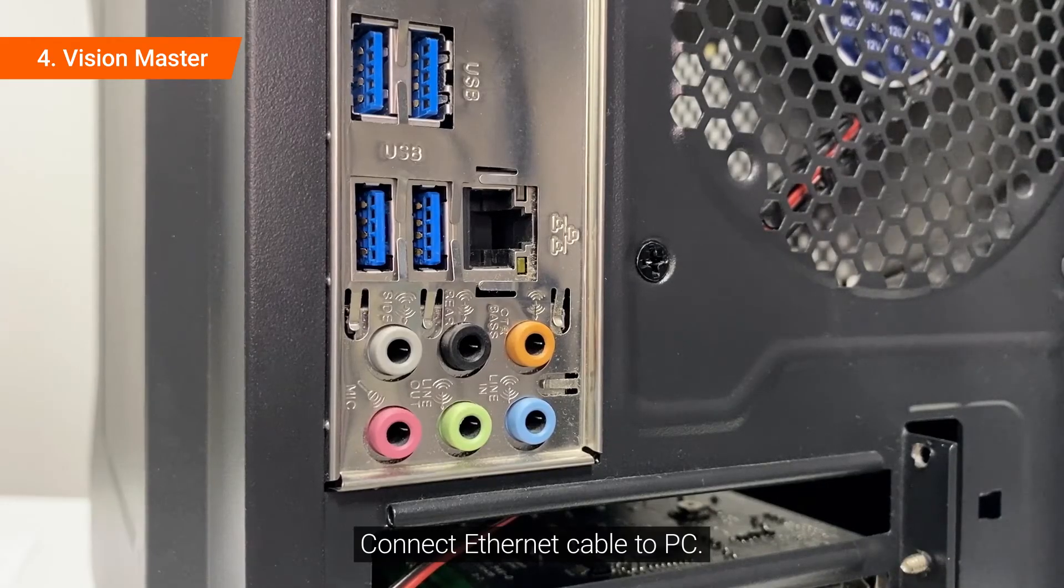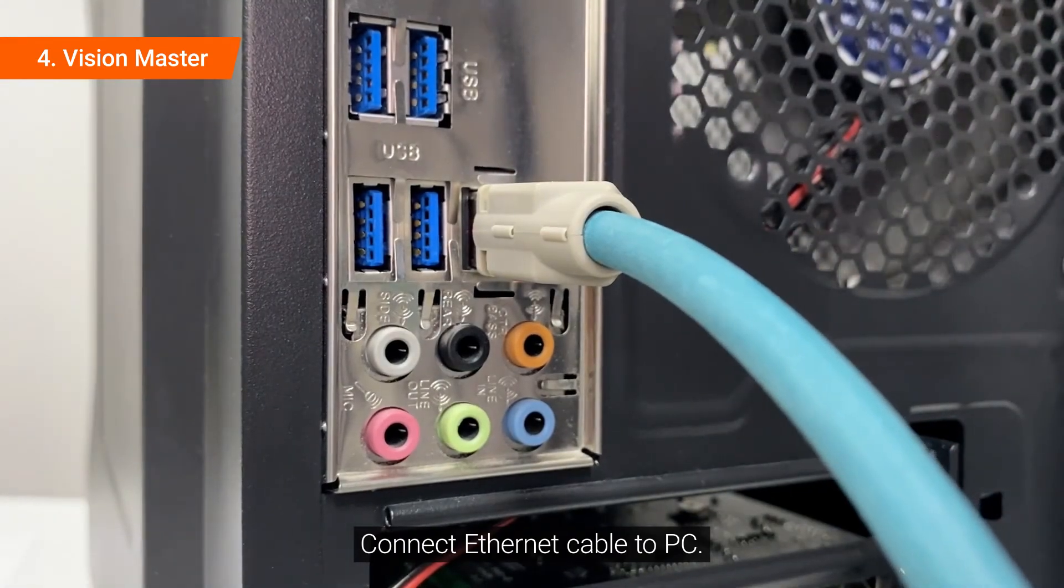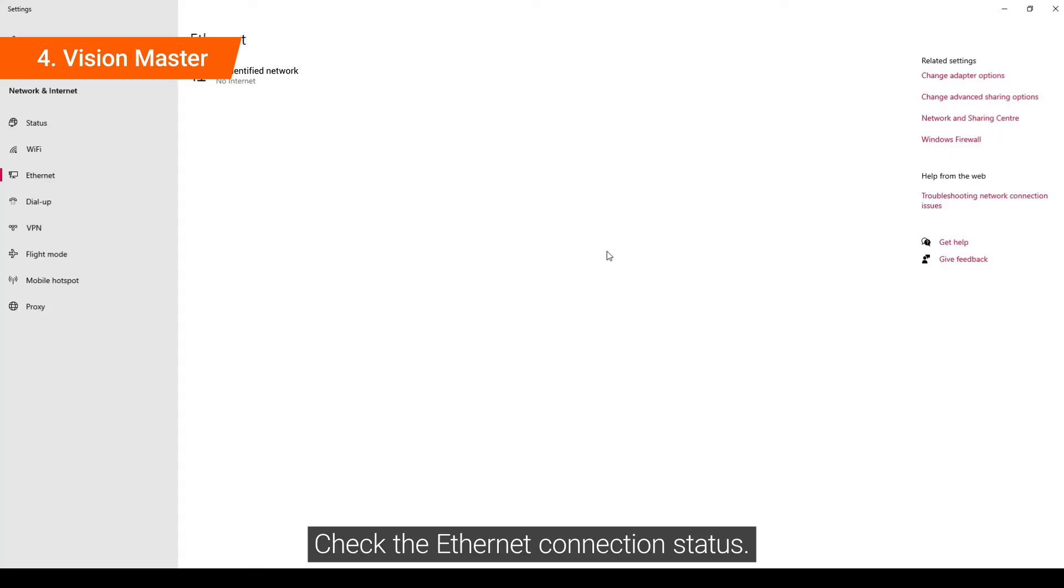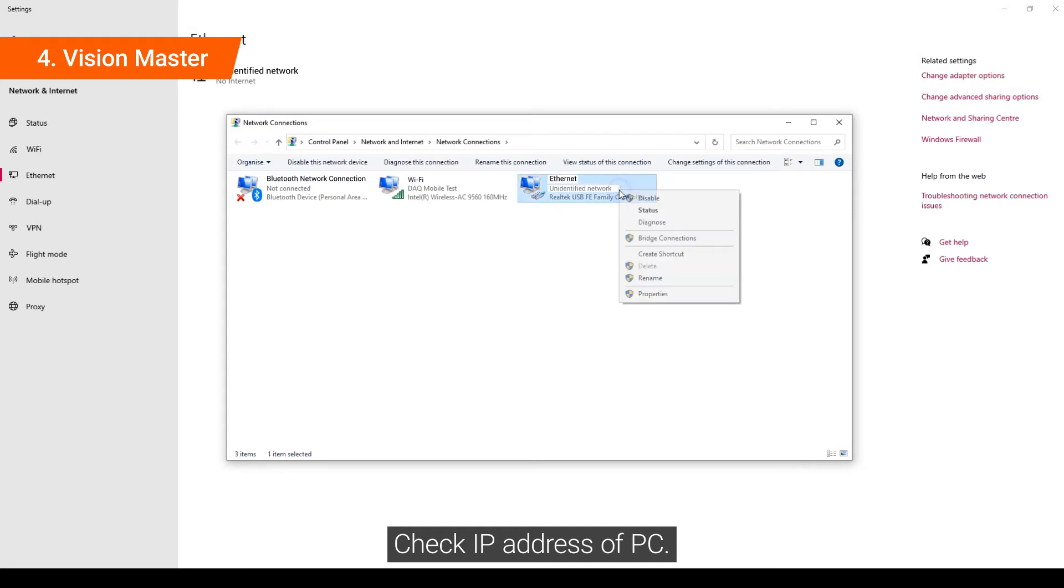Connect Ethernet cable to PC. Check the Ethernet connection status. Check IP address of PC.